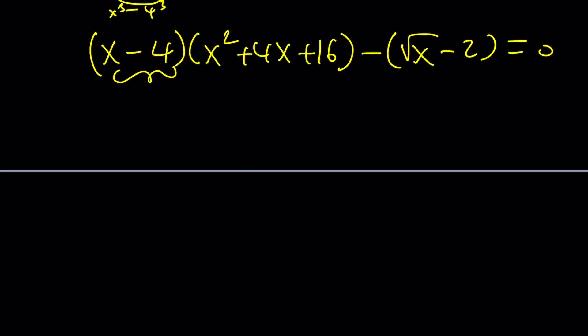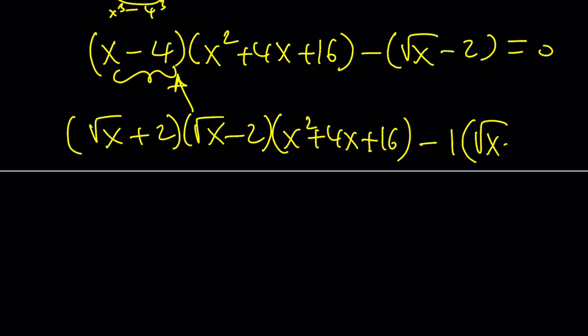This can be factored into the difference of two squares. Wait a minute. x is not a perfect square. It is in the rational world or irrational world. So, you can write it as root x plus 2 times root x minus 2. That's going to give you this. And then the quadratic. And then 1 times my radical. And, hey, I have a common factor. I just, uh-oh, that's not right. This is the other one. My common factor is going to be root x minus 2.